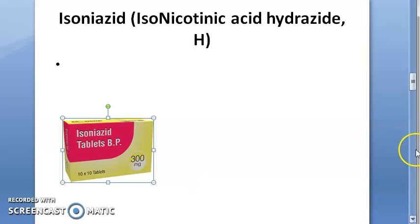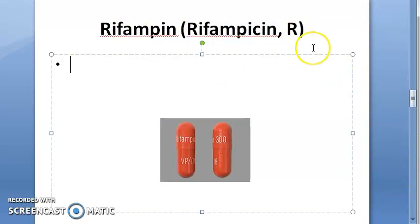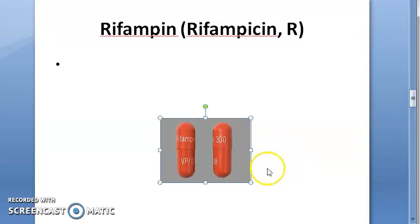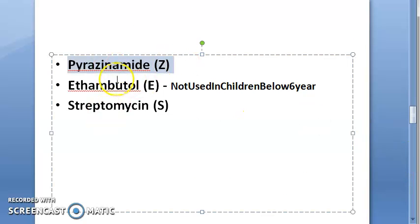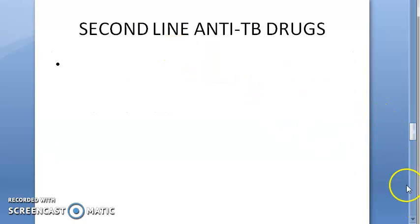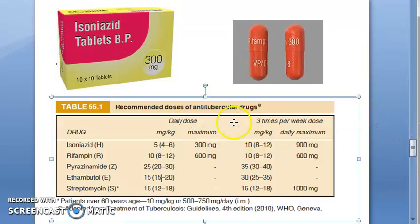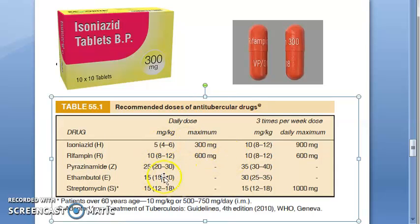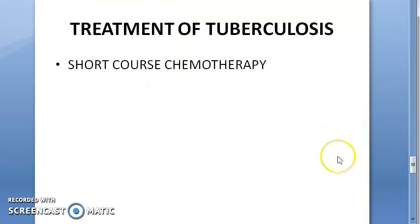Isoniazid is given at 300 mg. Rifampin, represented by R, is given at 600 mg. Ethambutol should not be given to children below 6 years. The recommended doses of all anti-tubercular drugs, including pyrazinamide, ethambutol, and streptomycin, are listed here. Second line drugs include fluoroquinolones, amikacin, cycloserine, etc.